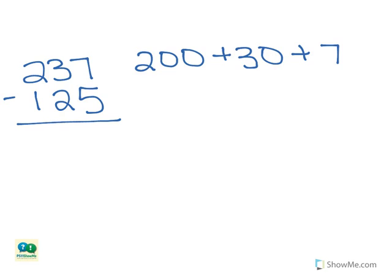Even though this is a subtraction problem, we need to add these numbers together because 200 plus 30 plus 7 equals 237. We will subtract later once we have expanded both numbers. Now we will expand the second number, 125.